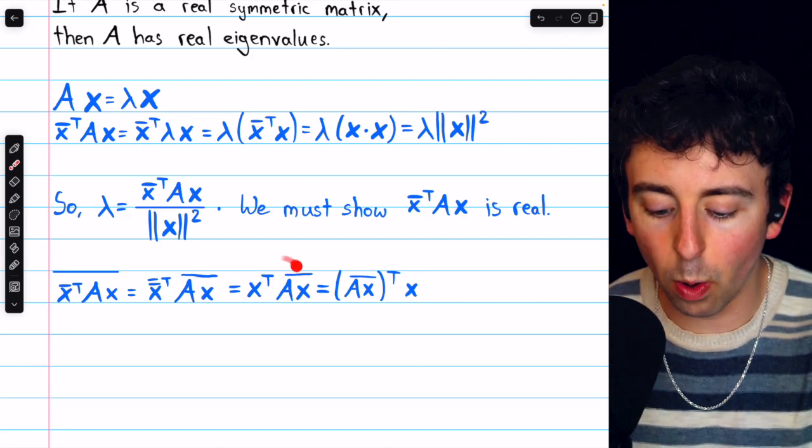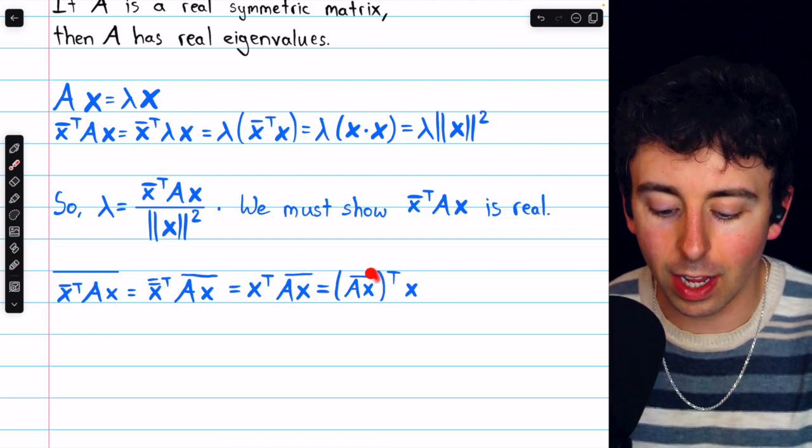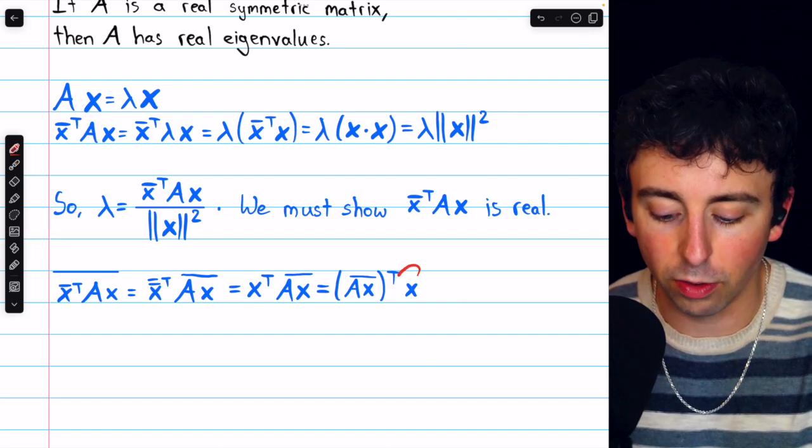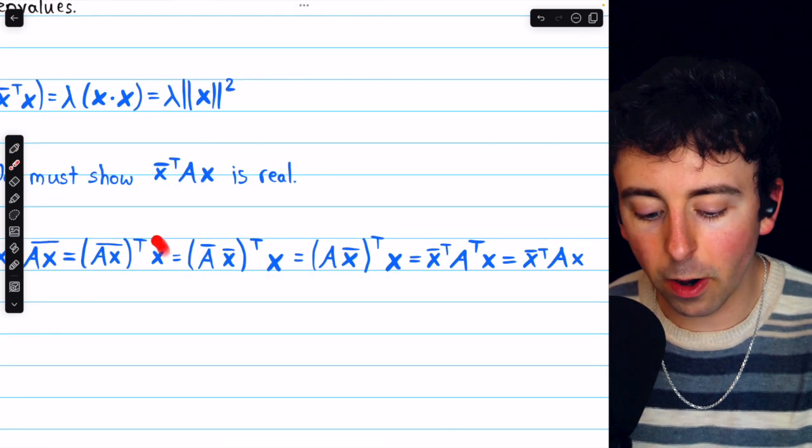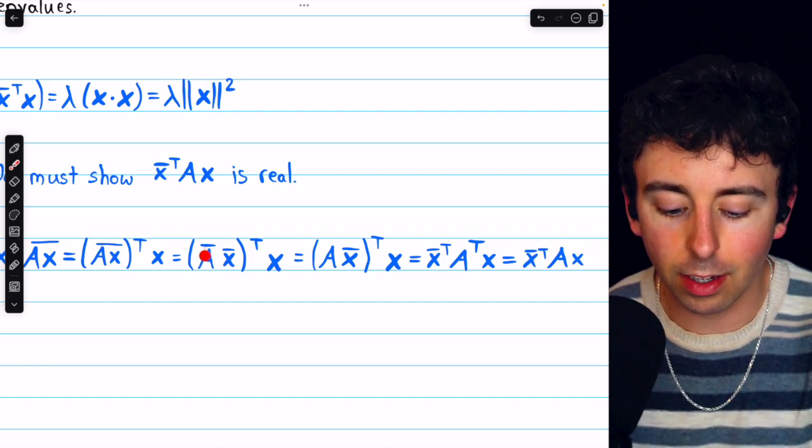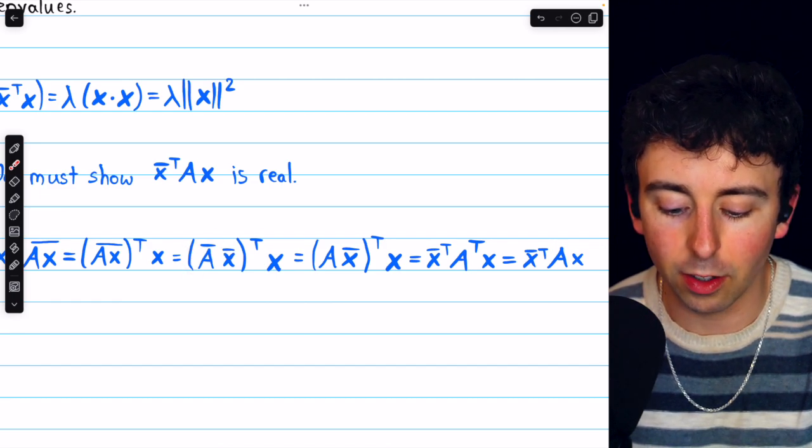But we can swap this order of multiplication by taking the transpose of Ax conjugate and moving that to the left, and taking the transpose of x transpose, which is just x. So now we are here, and we can rewrite the conjugate of Ax as the conjugate of A times the conjugate of x, and we're taking the transpose of this.